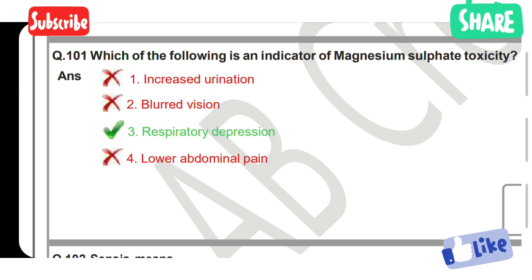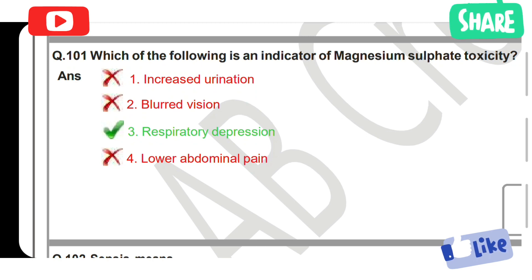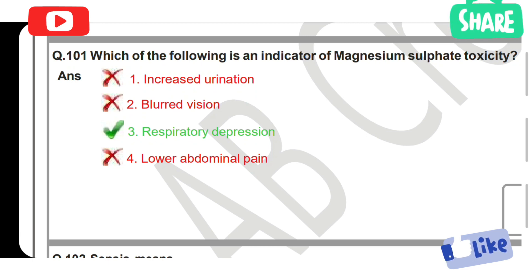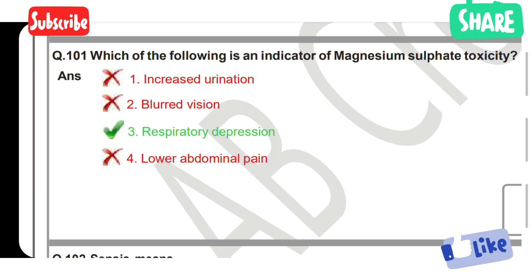Question: Which of the following is an indicator of magnesium sulfate toxicity? Option 1: Increased urination. Option 2: Blurred vision. Option 3: Respiratory depression. Option 4: Lower abdominal pain. Option 3 is the correct answer. Respiratory depression is an indicator of magnesium sulfate toxicity.